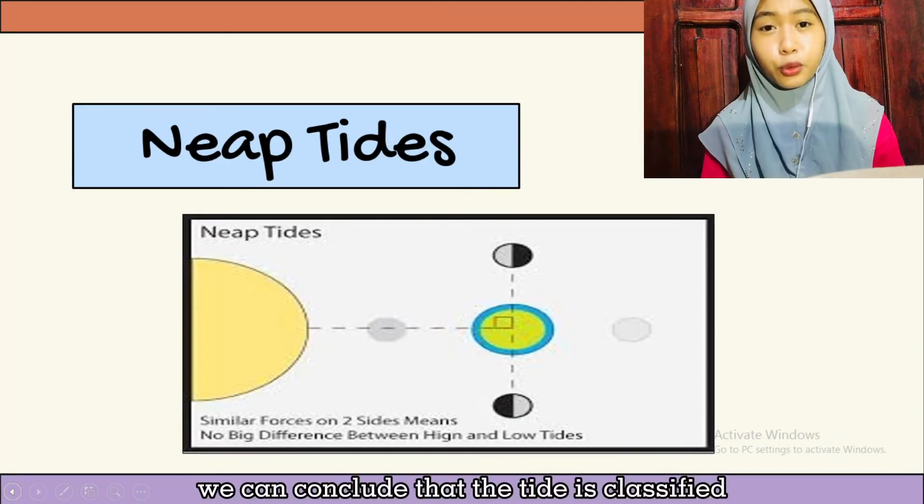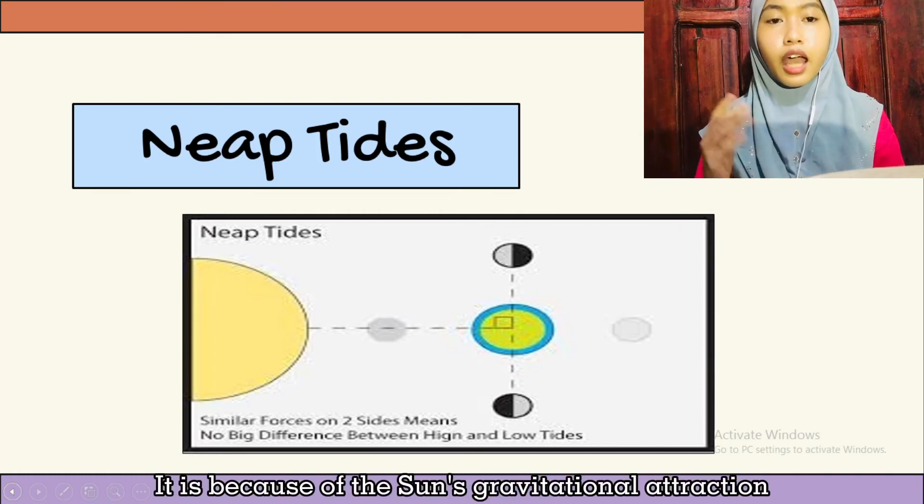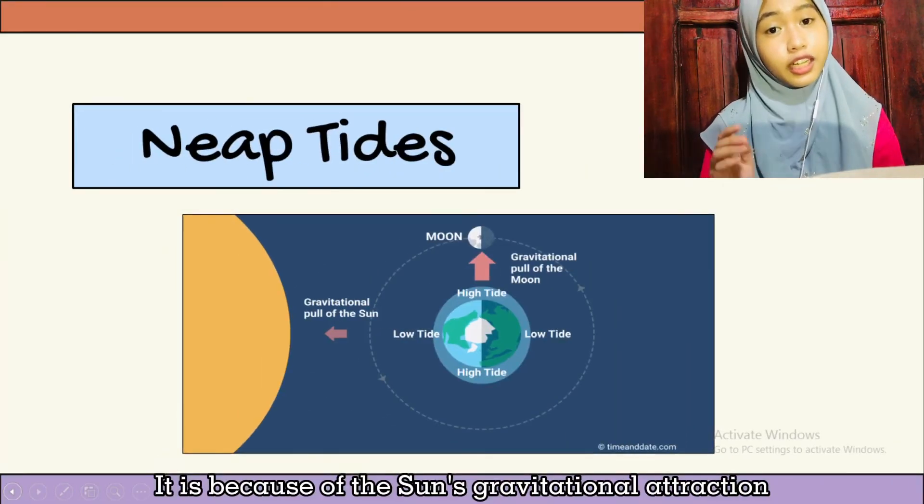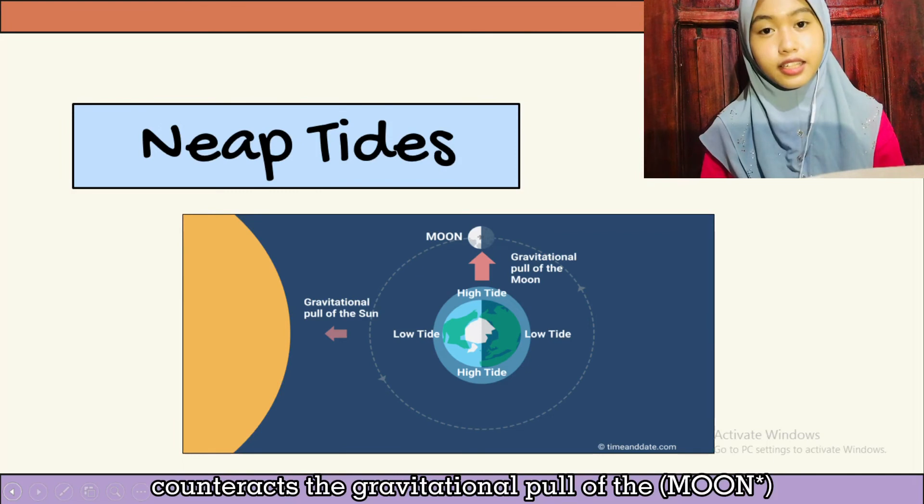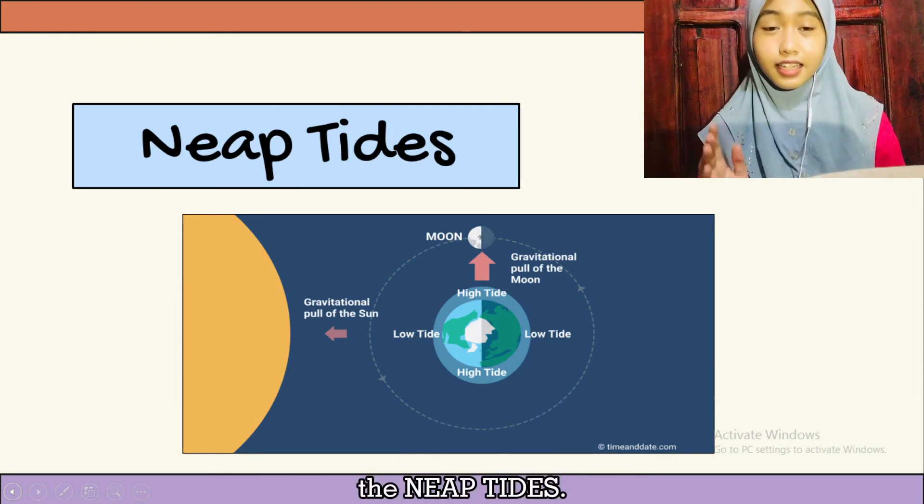This is because the Sun's gravitational attraction counteracts the gravitational pull of the Moon, resulting in weaker or lower tides than spring tides.